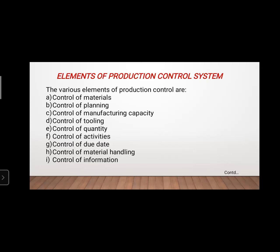The fourth element is control of tooling. You must have control over your tooling capacity and tooling kit — what number of tools are to be used, whether the tools related to your production are available, and how they are to be replaced. If a new company has insufficient tools, you must use those tools efficiently. You need to decide whether the available tools are sufficient or whether more tools need to be procured.